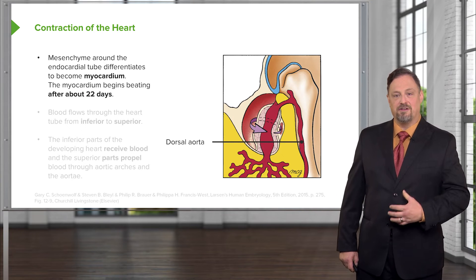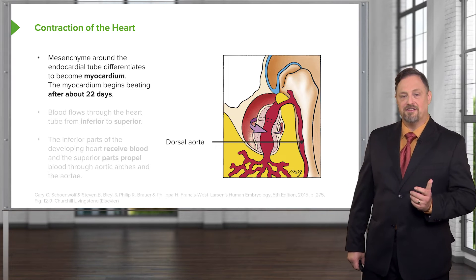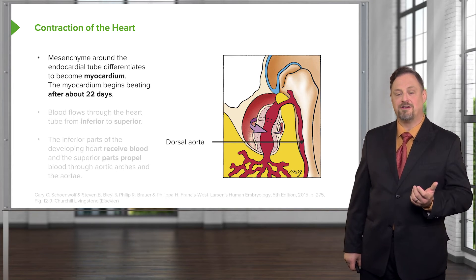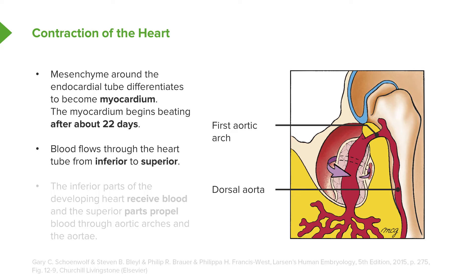The heart has more or less found its normal position in the eventual thorax and starts beating about 22 days into development. This is important because at this point the embryo can't get much larger without a heart — simple diffusion of gases and nutrients is no longer sufficient, and we need a circulatory system. The heart starts pumping at 22 days, bringing blood in from inferior, peristaltically pumping it out superiorly into a paired set of dorsal aorta on the posterior body wall.